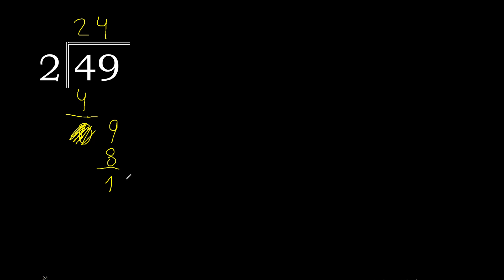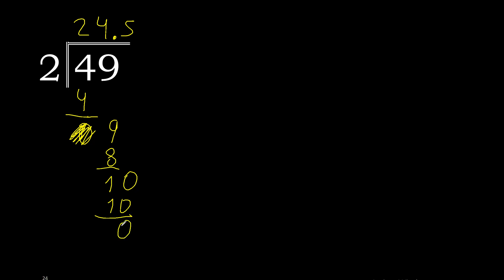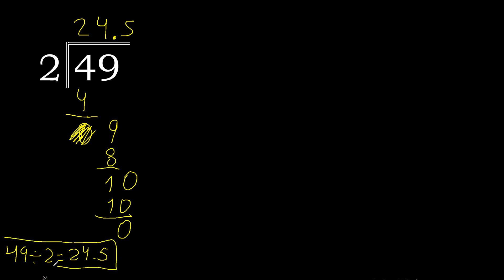Therefore, complete — always complete with 0 and here with a decimal point. 2 multiplied by 6 is 12, excessive. 2 multiplied by 5 is 10, subtract: remainder 0. Therefore, 49 divided by 2 is 24.5.